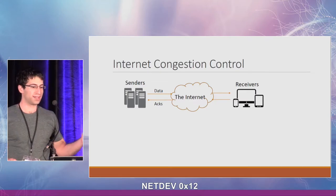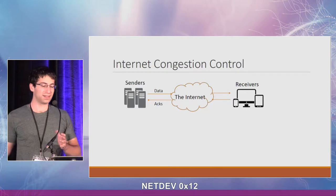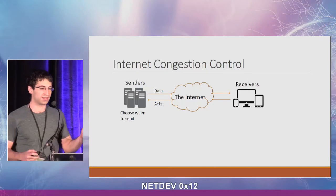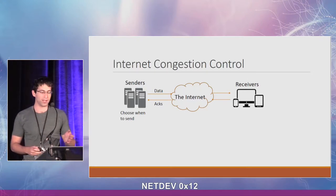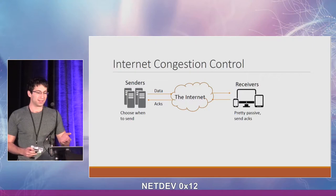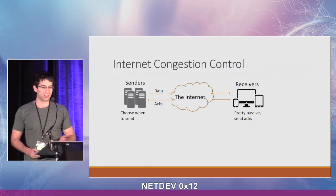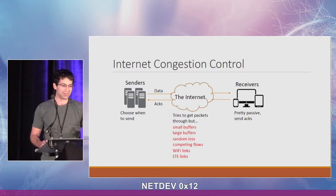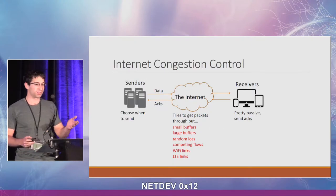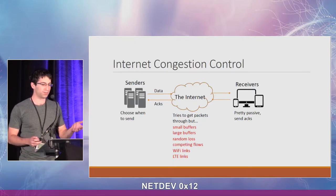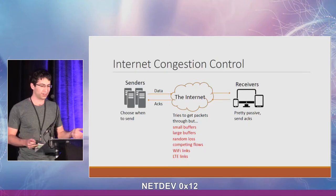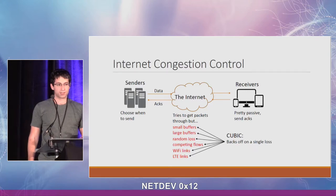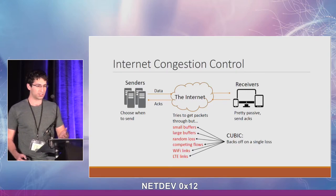We have the senders, the network, and the receivers. Senders choose when to send their data using either the congestion window or pacing. Receivers are pretty much passive — they only send acknowledgments. The network tries its best to route the packet through, but there are many different types of networks: small buffers, random loss, competing flows, etc.